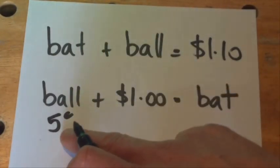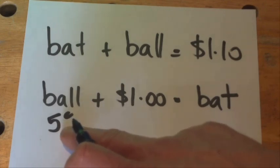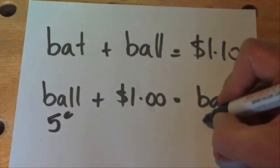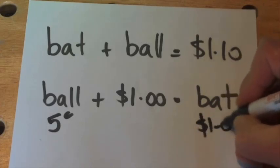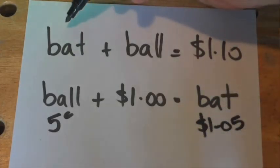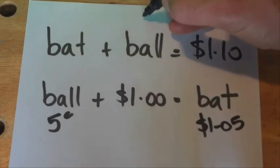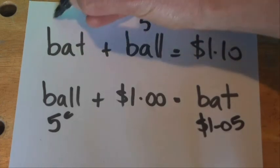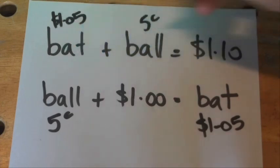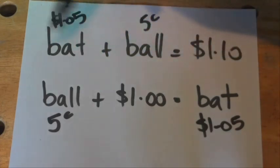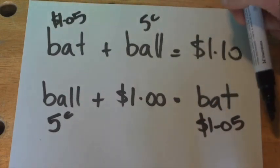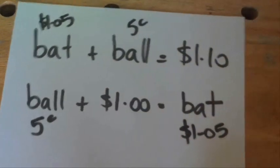Let's put that into the second equation: the ball at $0.05 plus $1 equals the bat, so the bat is $1.05. And then checking the first condition: $0.05 for the ball plus $1.05 for the bat equals $1.10. So the first condition is met, and the second condition has been met as well.